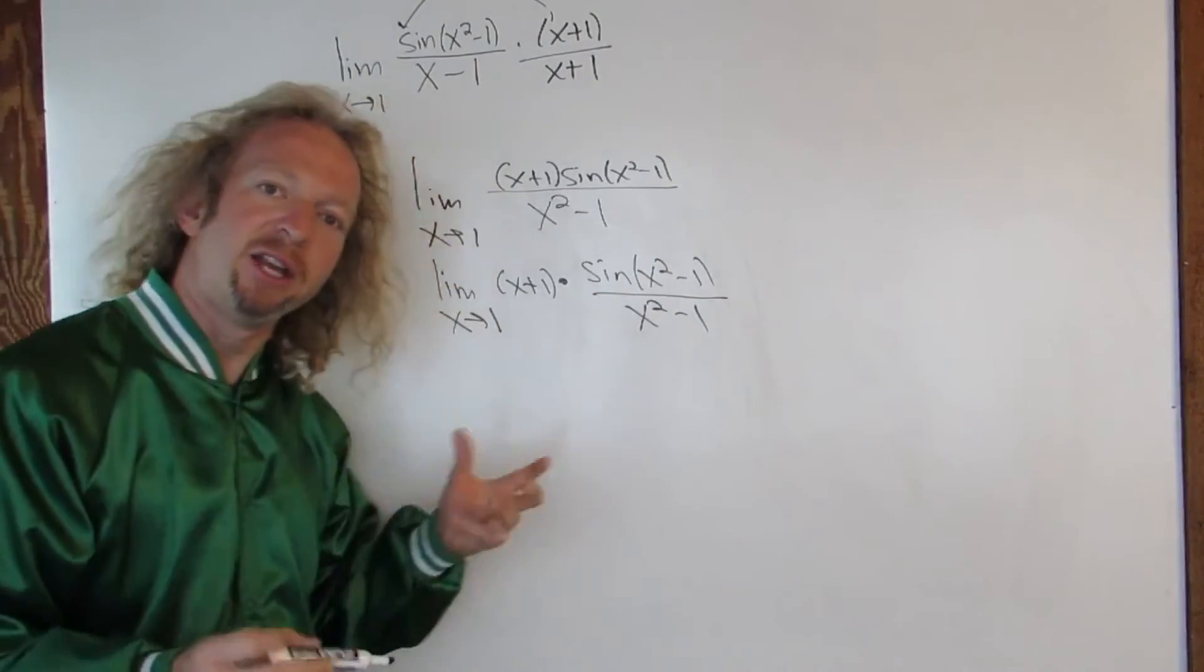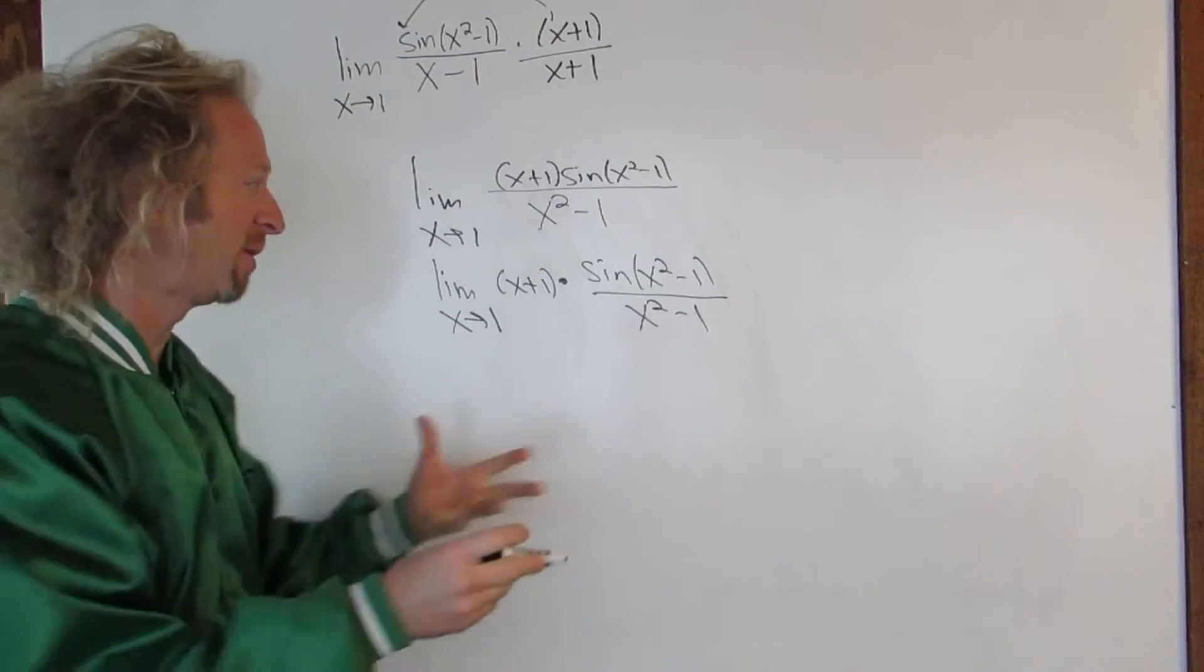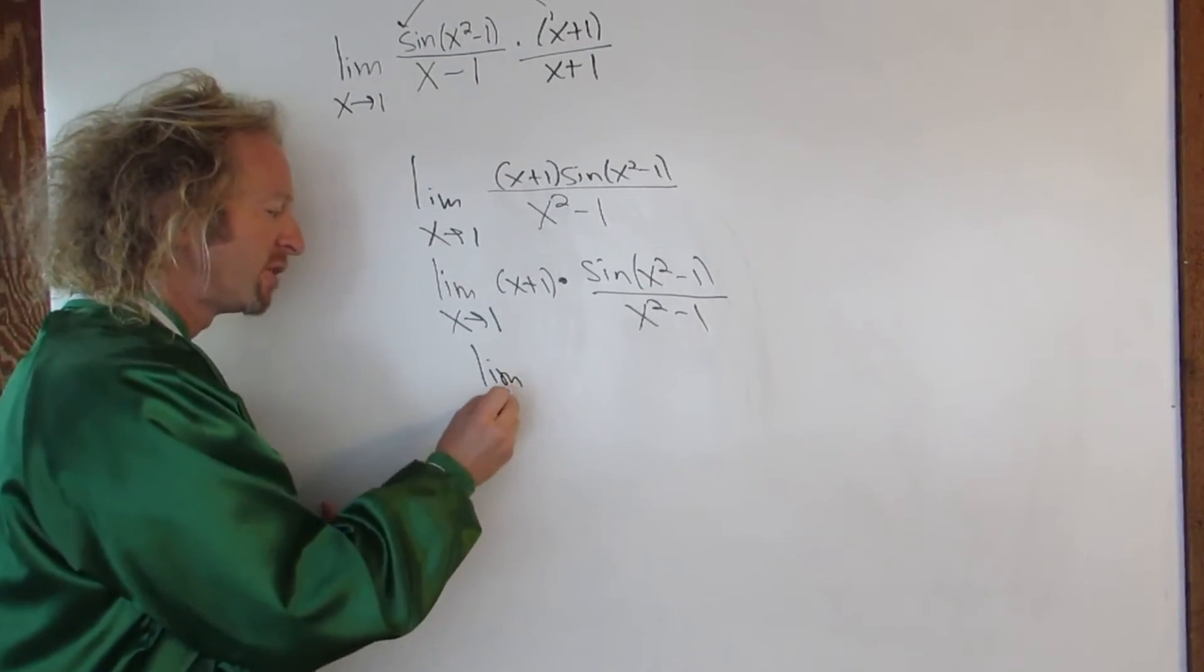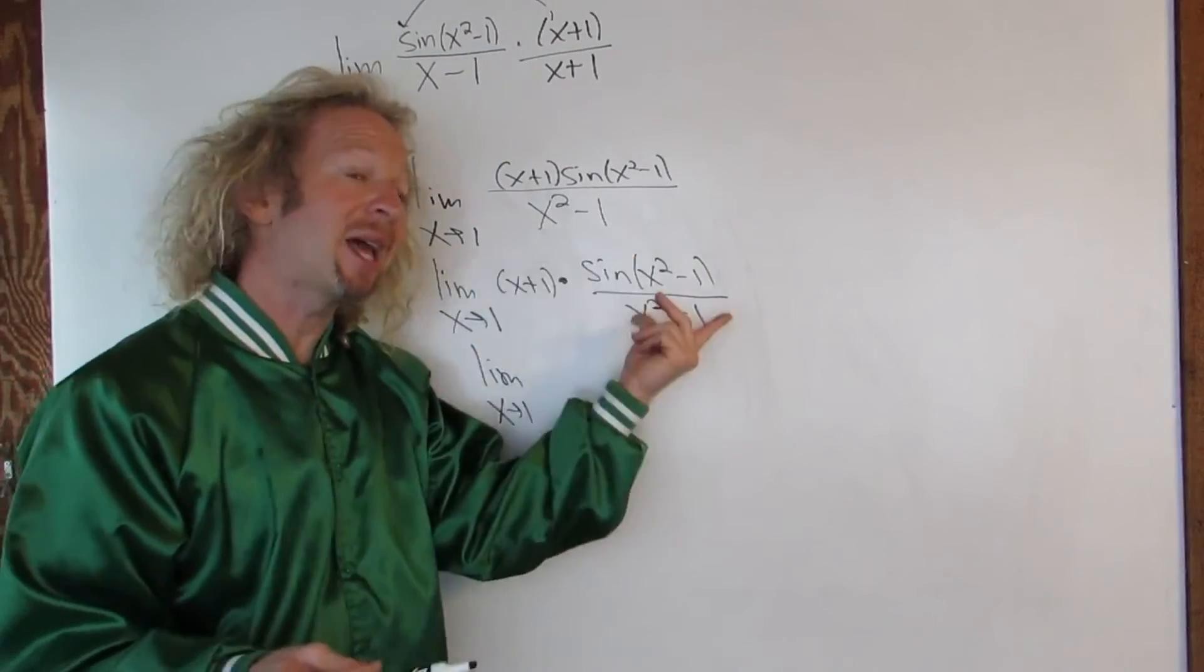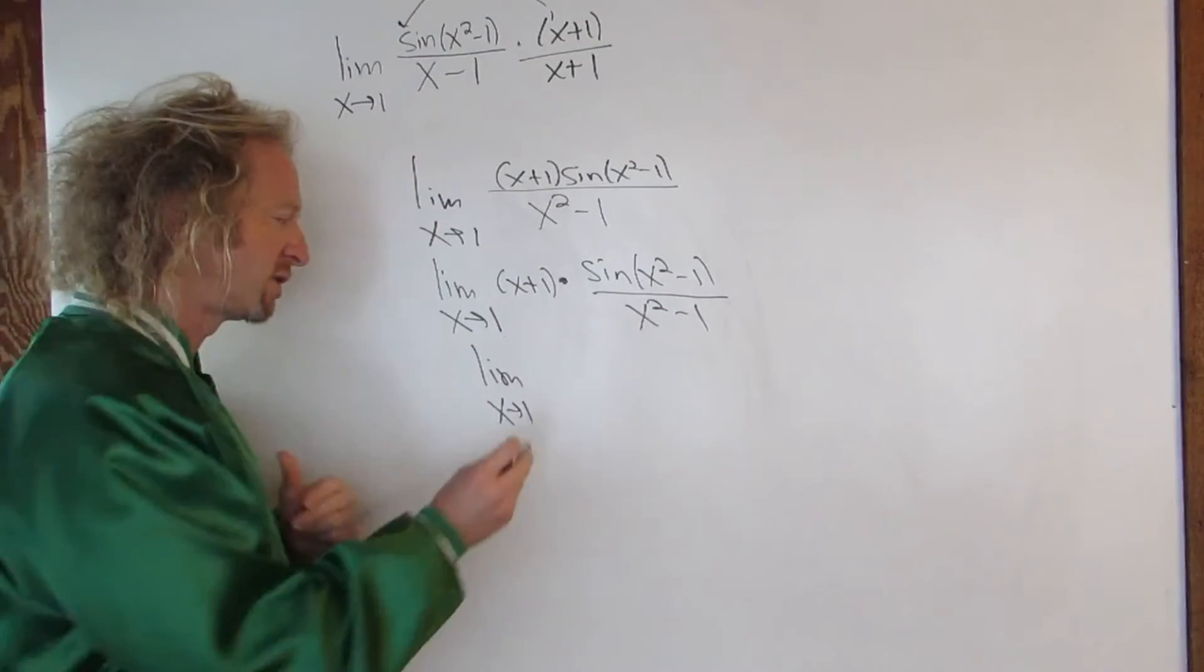So now you have a product. And if you really want to be super fancy and use all your limit properties, what you can do is you can break this up into the product of the limits. You can do that because this limit will exist and this limit will exist. So you can break it up as follows.